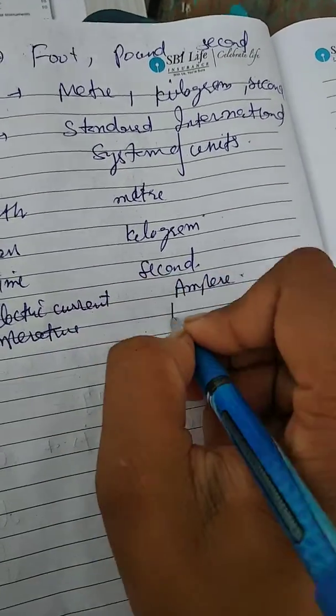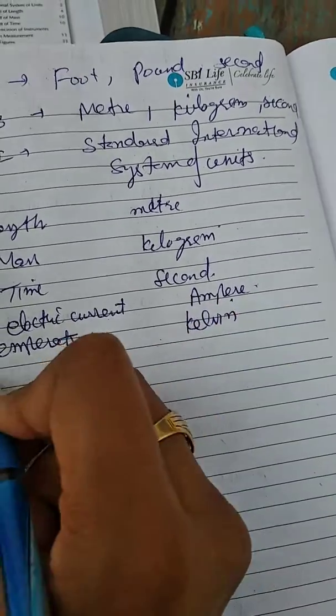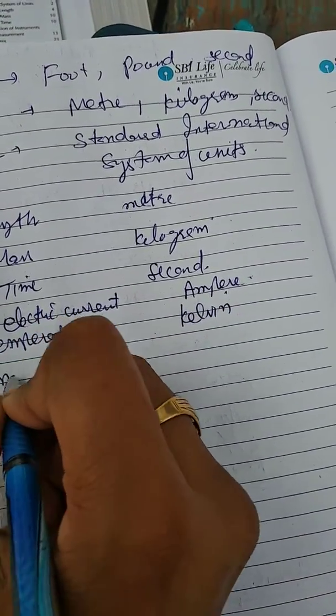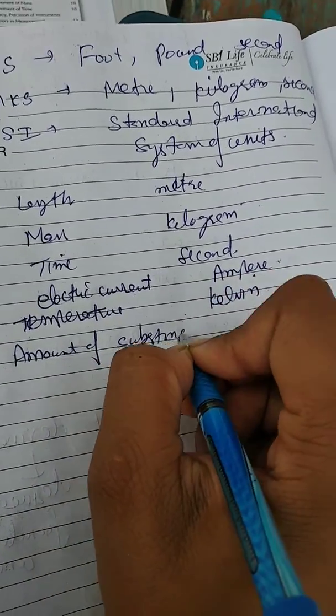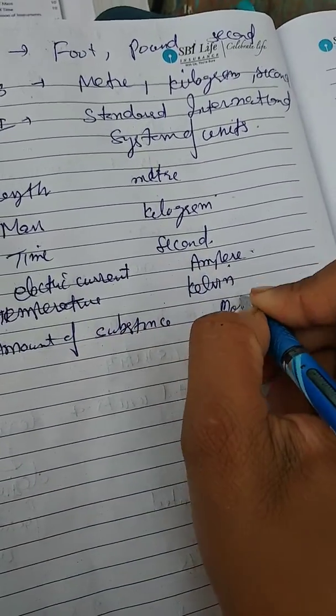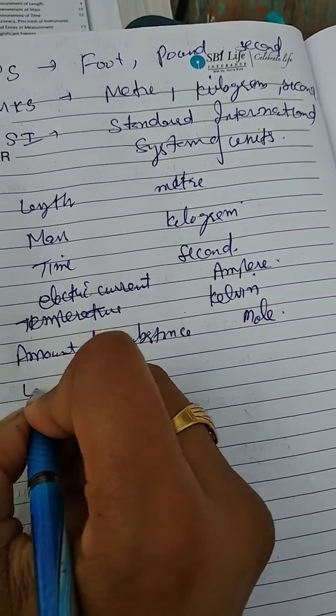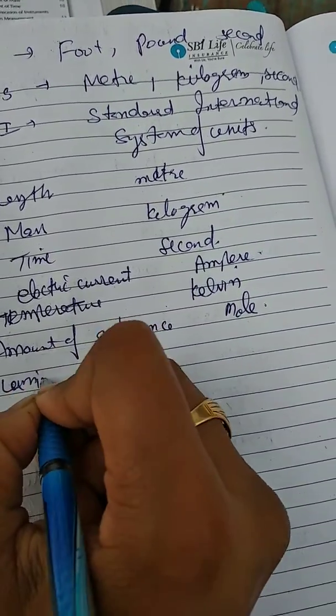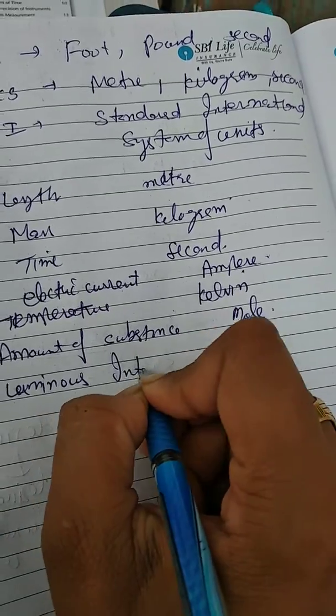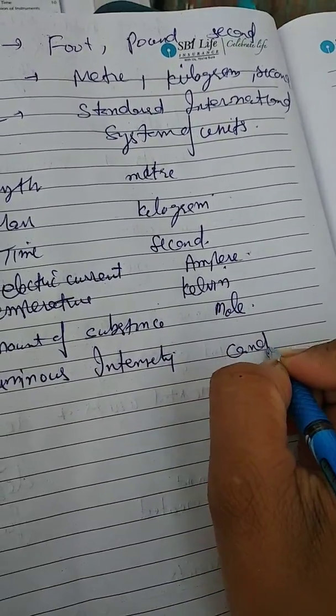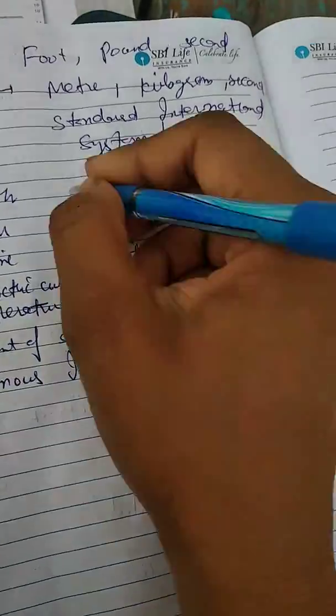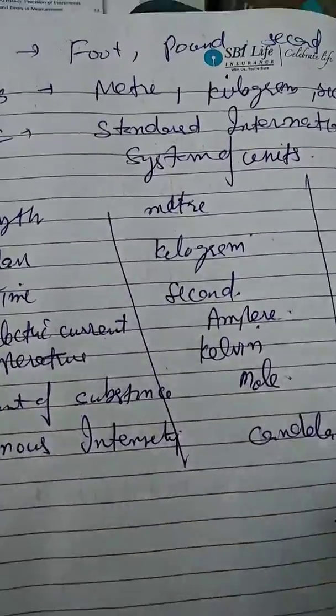Sixth is amount of substance, unit is mole. And last is luminous intensity, unit is candela. Clear. These are the seven units that come under the SI system.